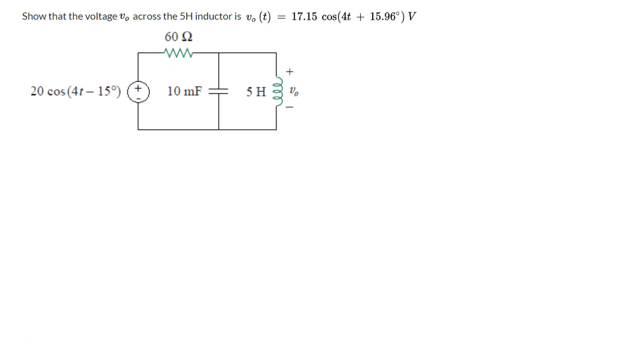And we're asked to figure out what the voltage across the inductor is. In fact, we're asked to show that the voltage across the inductor is given as 17.15 cosine 4t plus 15.96 degrees, so that's what we're asked to do. So this is another sinusoidal analysis problem.